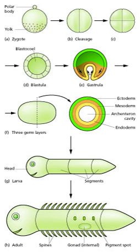A vascular plant begins from a single-celled zygote, formed by fertilization of an egg cell by a sperm cell. It begins to divide to form a plant embryo through the process of embryogenesis. The resulting cells organize so that one end becomes the first root while the other end forms the tip of the shoot. By the end of embryogenesis, the young plant will have all the parts necessary to begin its life. Once the embryo germinates from its seed or parent plant, it begins to produce additional organs through the process of organogenesis.